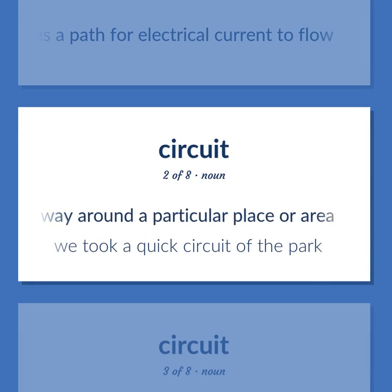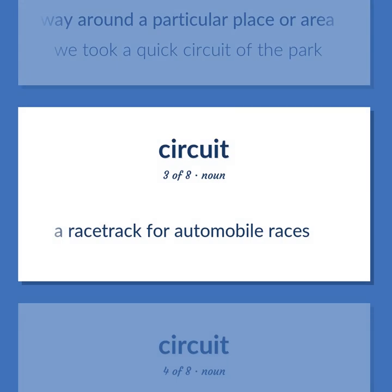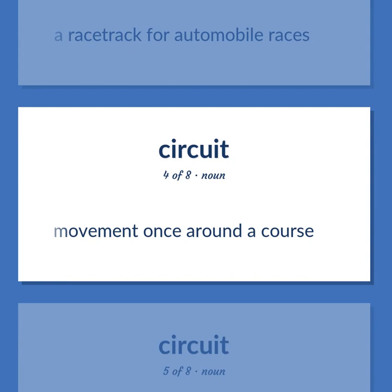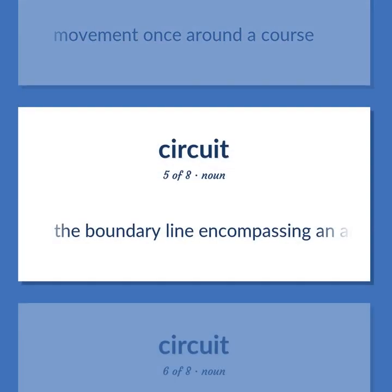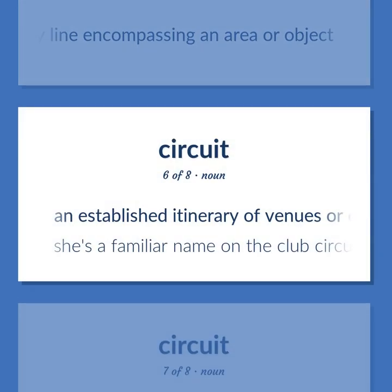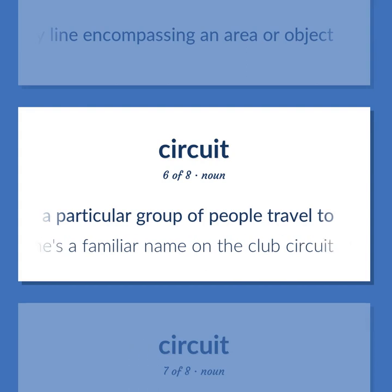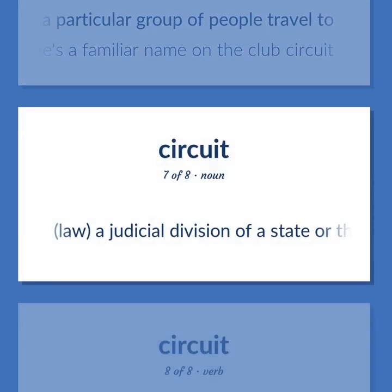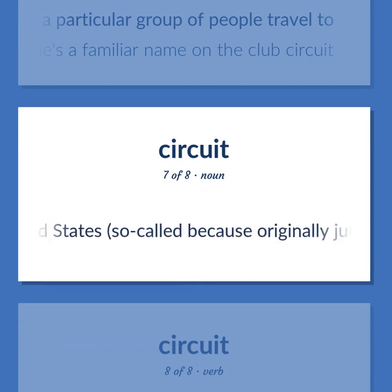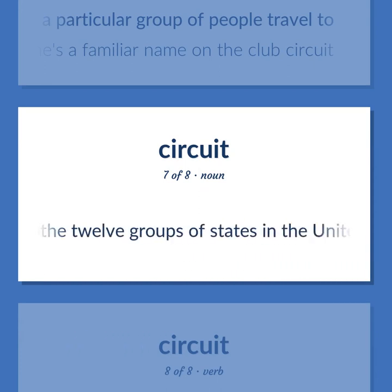A journey or route all the way around a particular place or area — we took a quick circuit of the park. A racetrack for automobile races. Movement once around a course. The boundary line encompassing an area or object. An established itinerary of venues or events that a particular group of people travel to — she's a familiar name on the club circuit. Law: a judicial division of a state or the United States, so called because originally judges traveled and held court in different locations; one of the 12 groups of states in the United States covered by a particular circuit court of appeals.